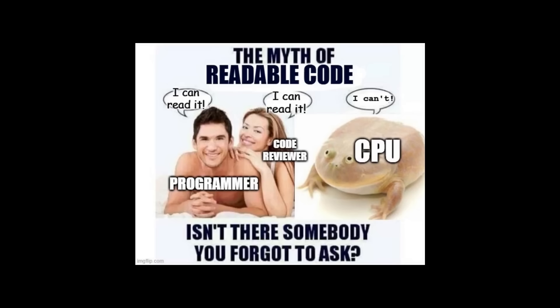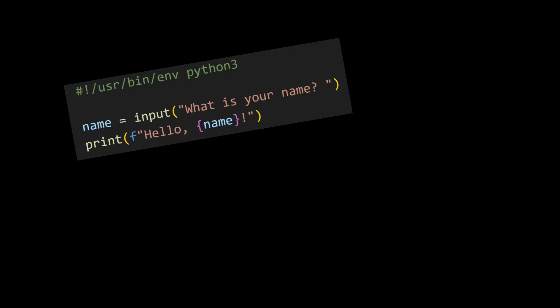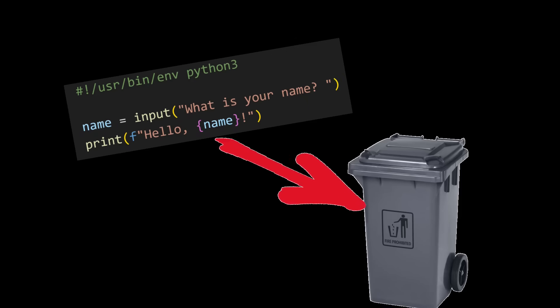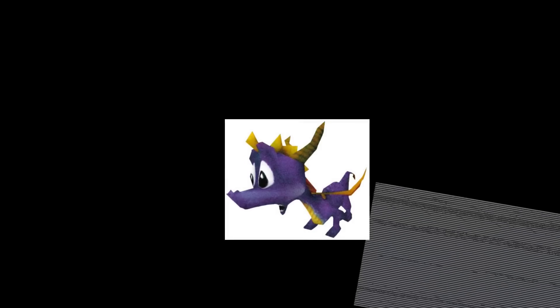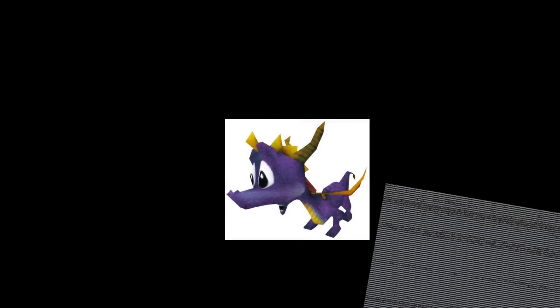This is only easier for us to understand, but it's no joke that a computer would be more likely to understand the Hello World program shown earlier. So how do we go from rubbish to bin? The natural approach one would think of is to just translate the higher-level programming language into lower-level binary that the computer can understand. This is achieved with a compiler.